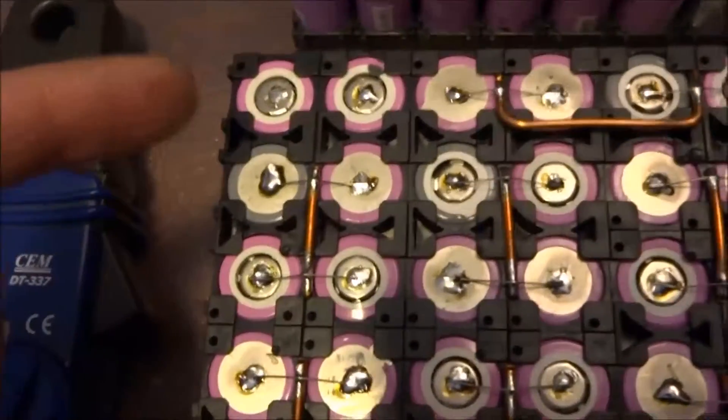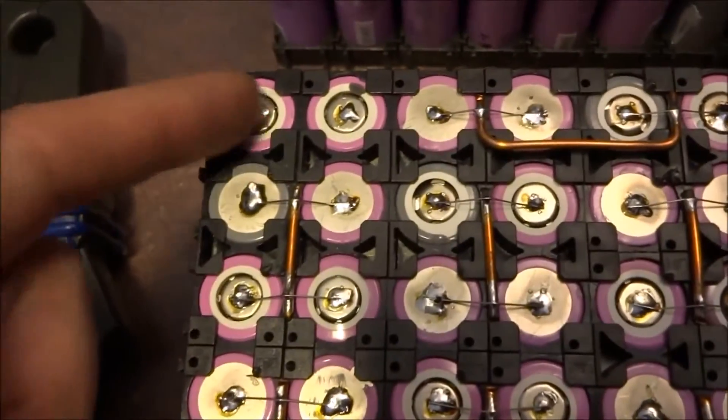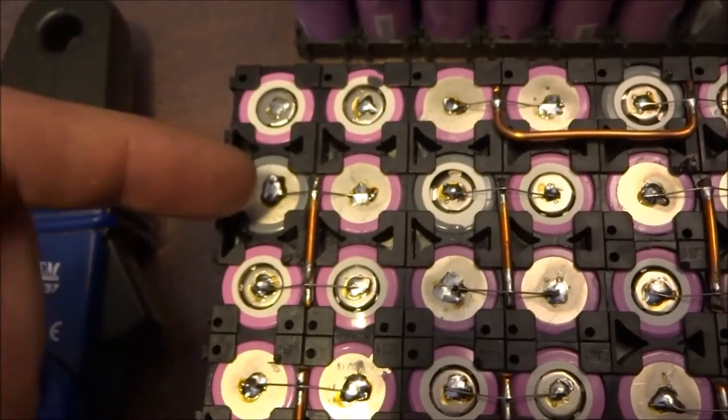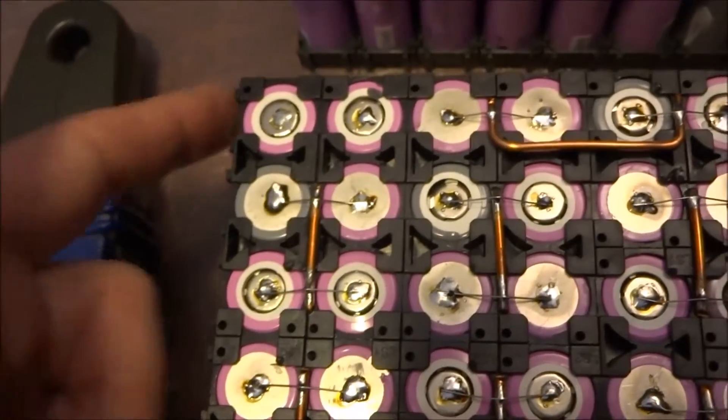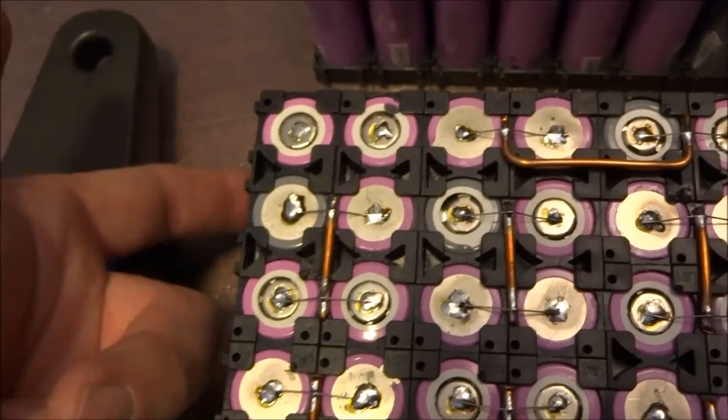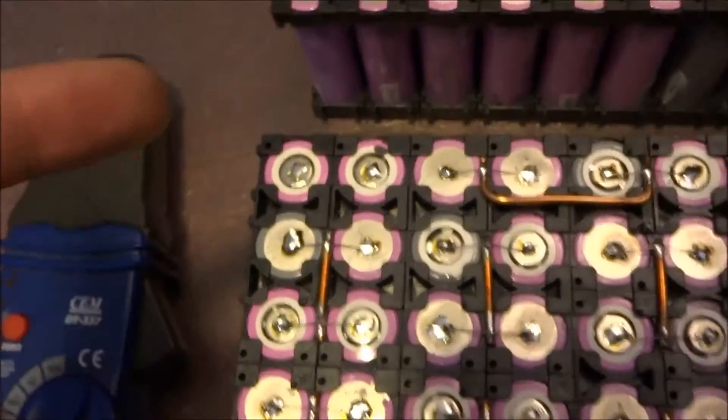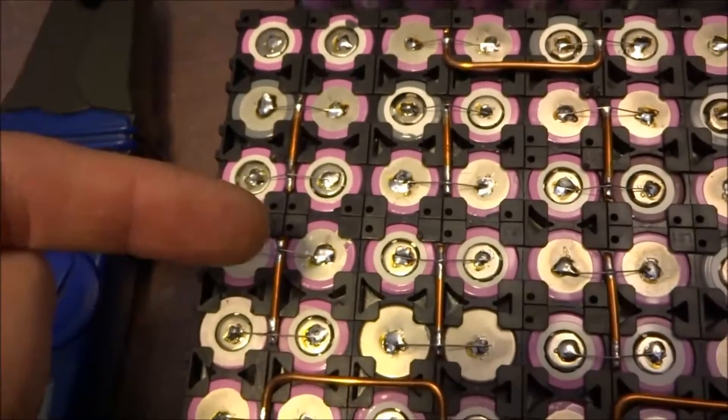So if you follow through here, there's no leads right now on this one because this is the positive. Then underneath is a negative, so there's a bridge underneath. I'll show you after. And then this is bridged, this is bridged.